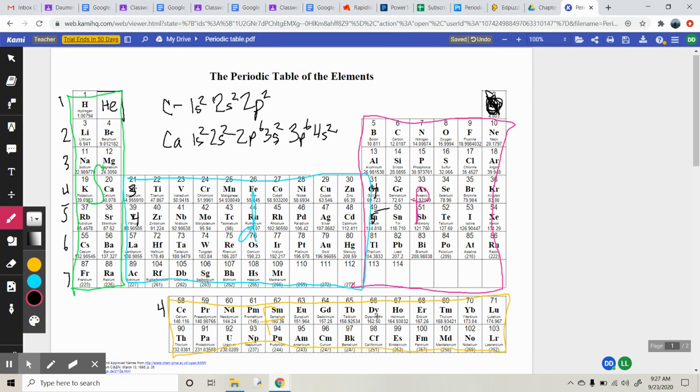So we go 6S2, 4F14, and then we pop back out where we started, which would be 5D10. 5D10, 6P6, 7S2, 5F14, and 6D, however many we want.